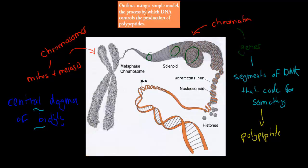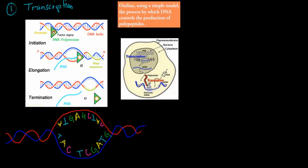Outline using a simple model the process by which DNA controls the production of polypeptides. So how DNA is responsible for making polypeptides. That's what we're going to cover in this video. And there's two stages you should remember: transcription and translation.